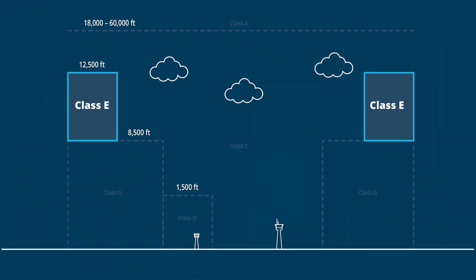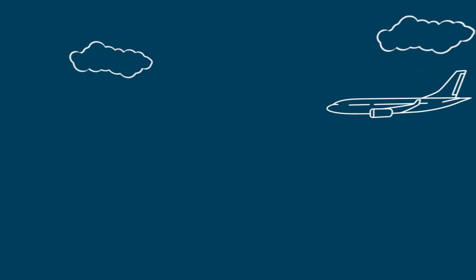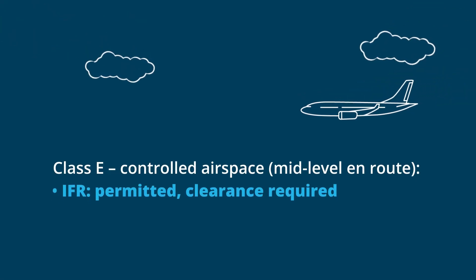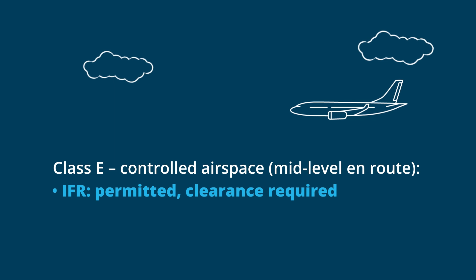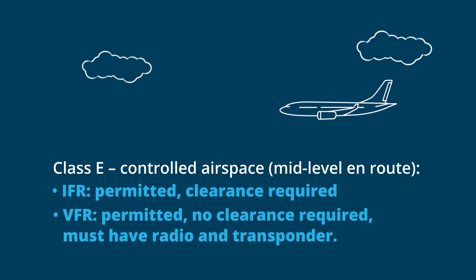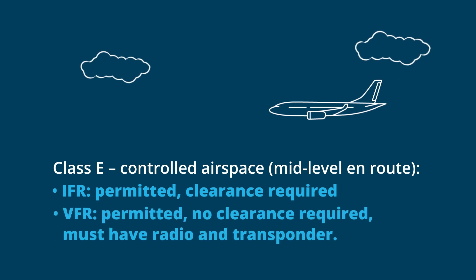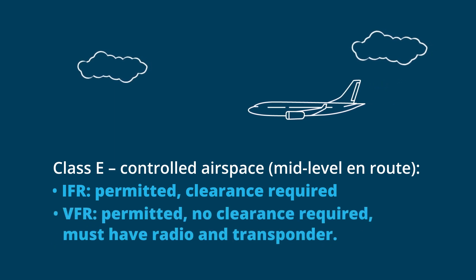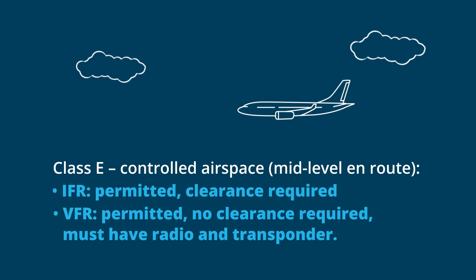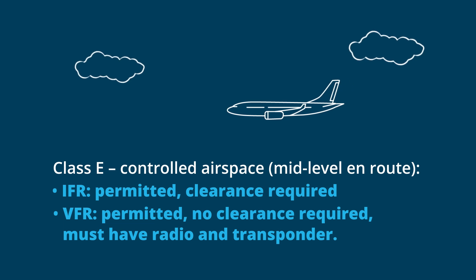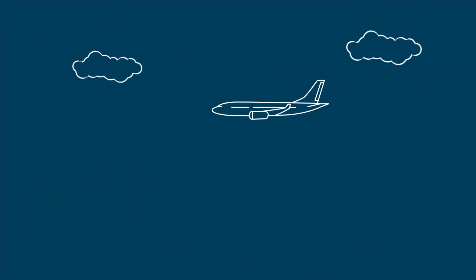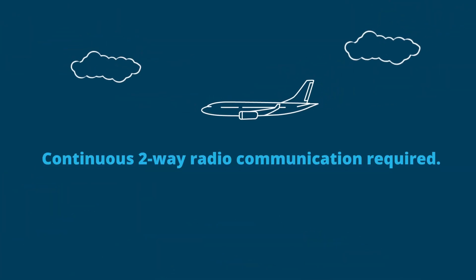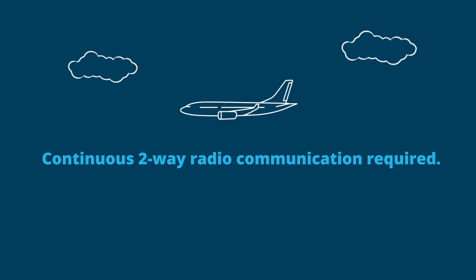Class E is mid-level, en route controlled airspace. IFR flights do not require clearance but do require a radio and transponder. Continuous two-way radio communication is required.